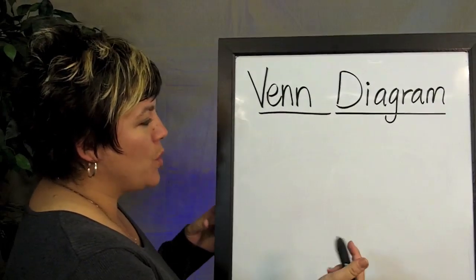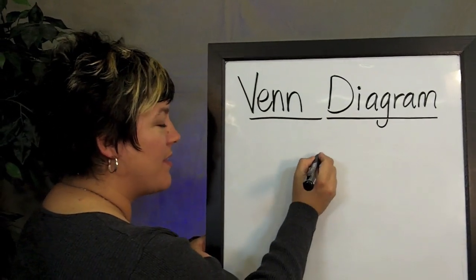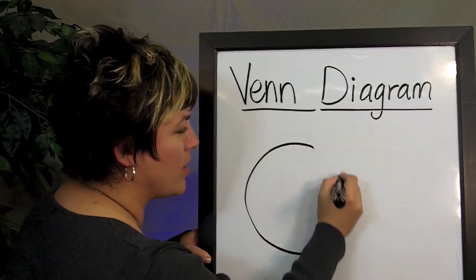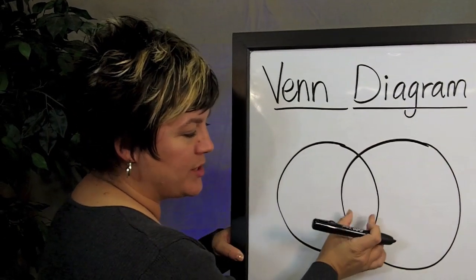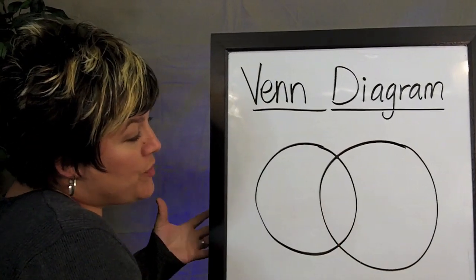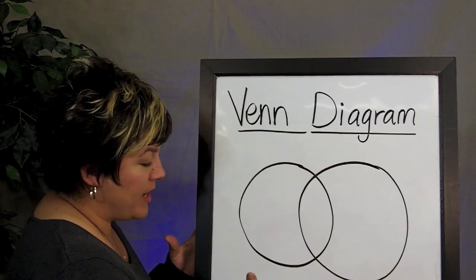Venn diagram, a way to help us organize things, and they look like this. It's a graphic organizer, where a simple one will be two circles that intersect with one another. You'll do this to help you compare things.